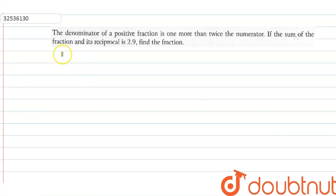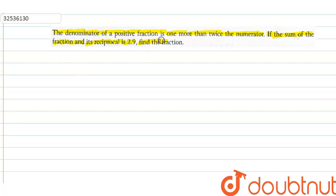So the question is: the denominator of a positive fraction is 1 more than twice the numerator, and if the sum of the fraction and its reciprocal is 2.9, then find the fraction.